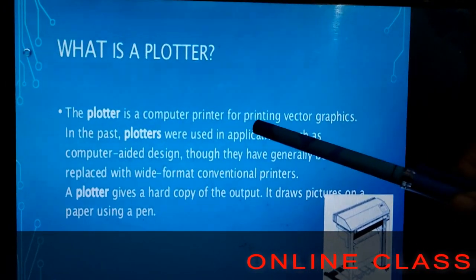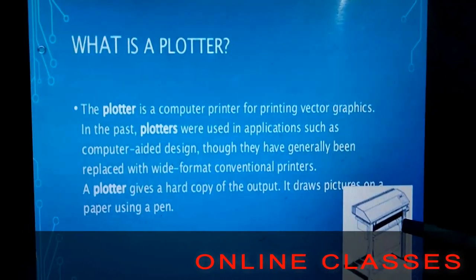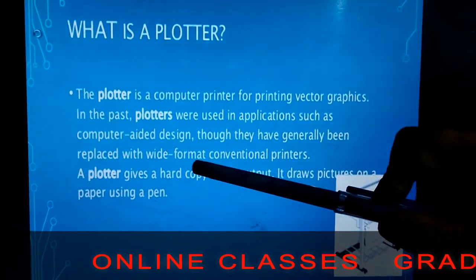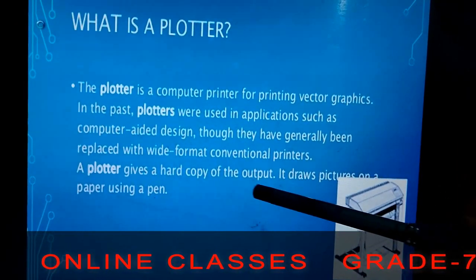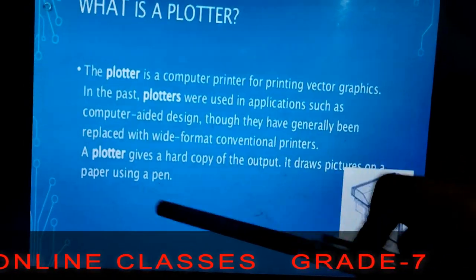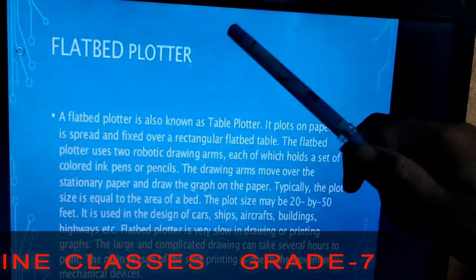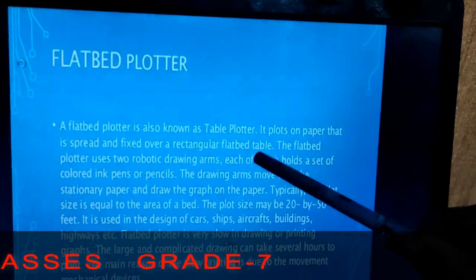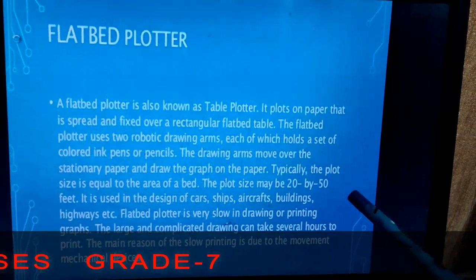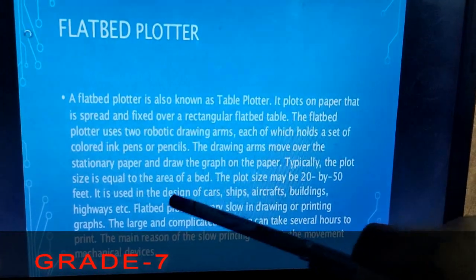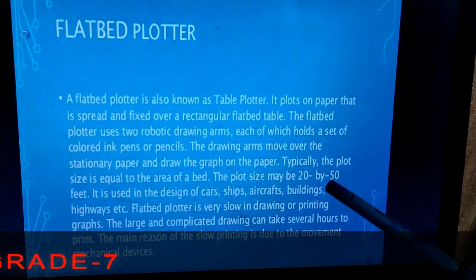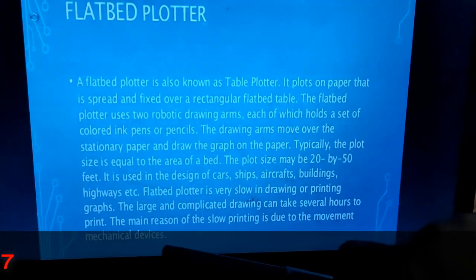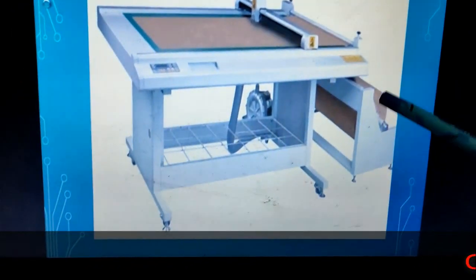A plotter is a computer printer for printing vector graphics — used to generate prints with computer-aided designs. It gives a hard copy of the output and draws pictures on paper using a pen. A flatbed plotter, also known as a table plotter, plots on paper spread and fixed over a rectangular flat bed table. It is used to design cars, ships, aircraft, buildings, and highways. The main reason for slow printing is the movement of mechanical devices on it.